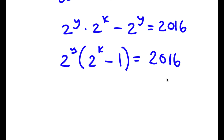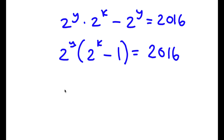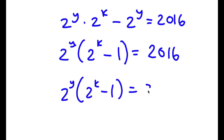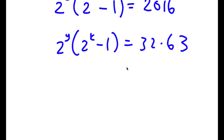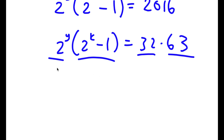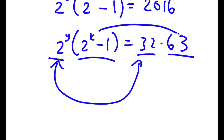I can rewrite 2,016 as 32 times 63. Notice that I have an even number times an odd number. On the left side, 2 to the power of any number is even, and an even number minus 1 is going to be an odd number. So these two factors match: the even part equals the even part, and the odd part equals the odd part.